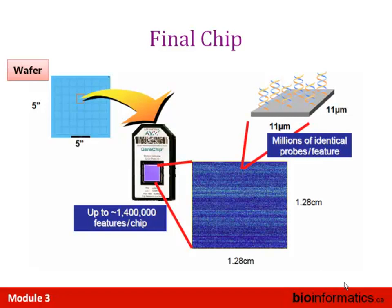Let's look at the structure of an Affymetrix array — this is an older one, about 8 or 10 years old. The initial wafer is 5 inches by 5 inches, and from that a tiny piece is taken for each microarray — roughly 100 individual arrays from a 10-by-10 grid. Masks are used to shine light repeatedly, making 100 identical arrays. Each spot is 11 microns by 11 microns.